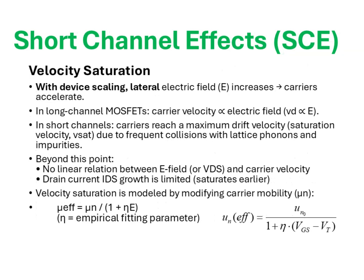Now that we have established how short channel effects emerge when the channel length becomes comparable to the depletion widths or the junction depths, let us move forward to a very critical manifestation: velocity saturation. As the MOSFET channel is scaled down, the electric field inside the channel does not remain uniform. For the same applied drain-to-source voltage, the effective lateral electric field increases significantly because the channel length has reduced, and this higher electric field tends to accelerate carriers more aggressively.